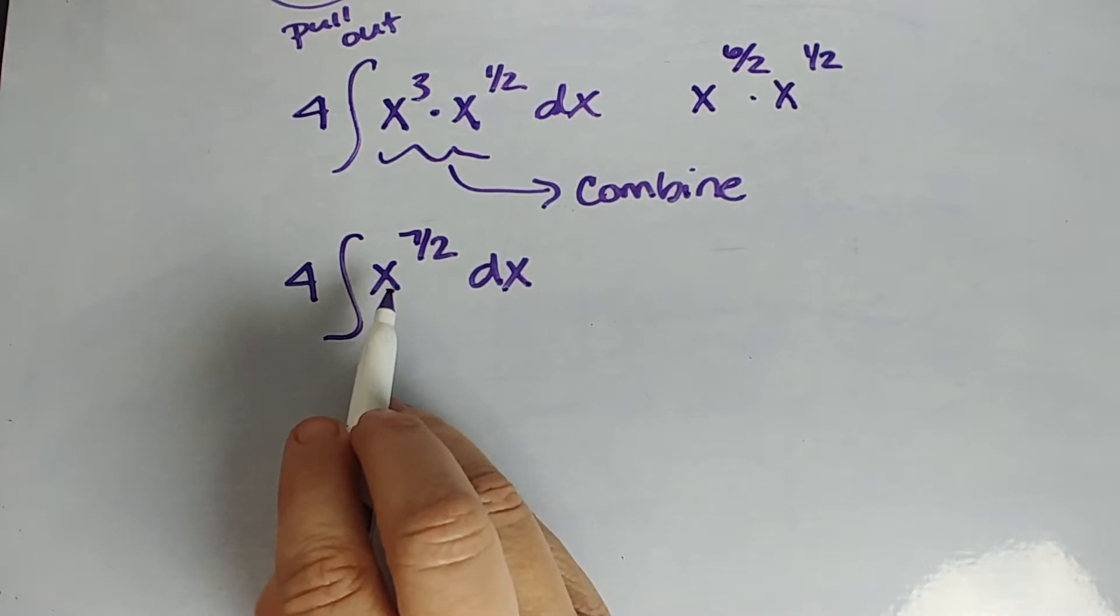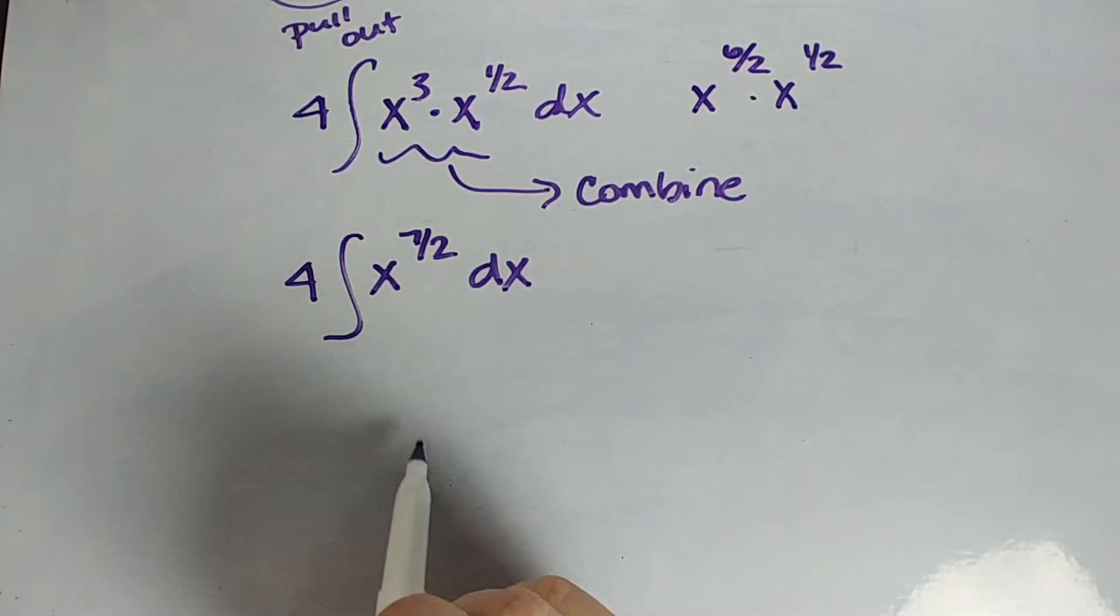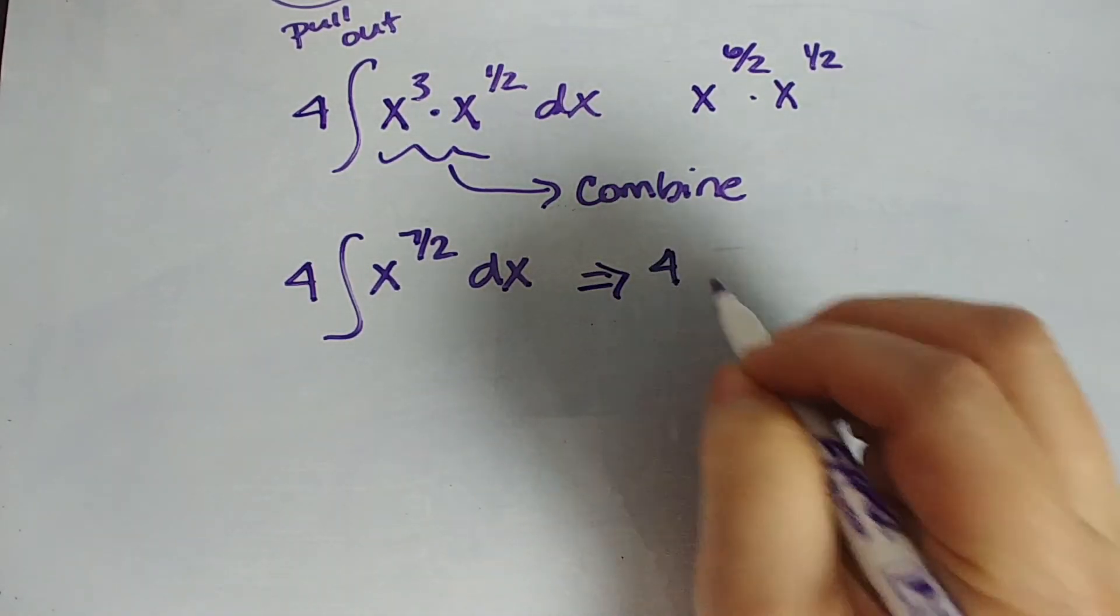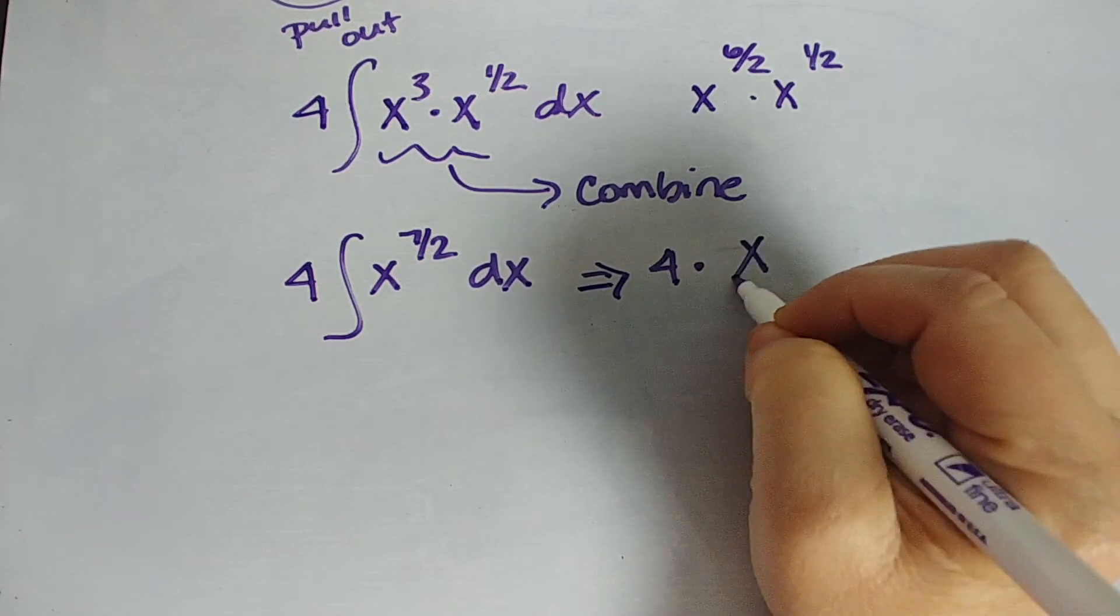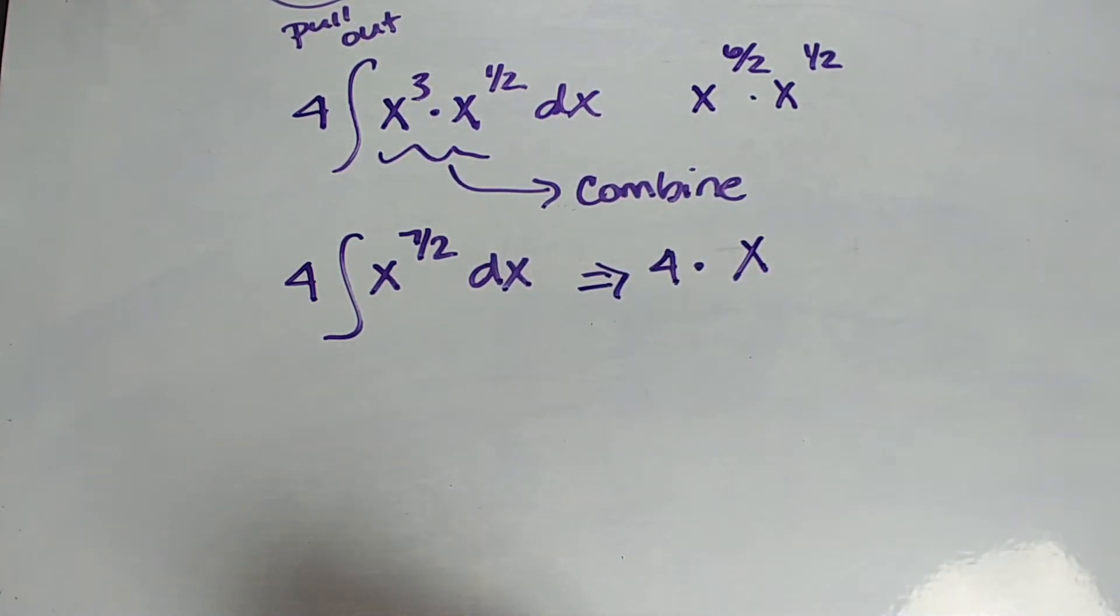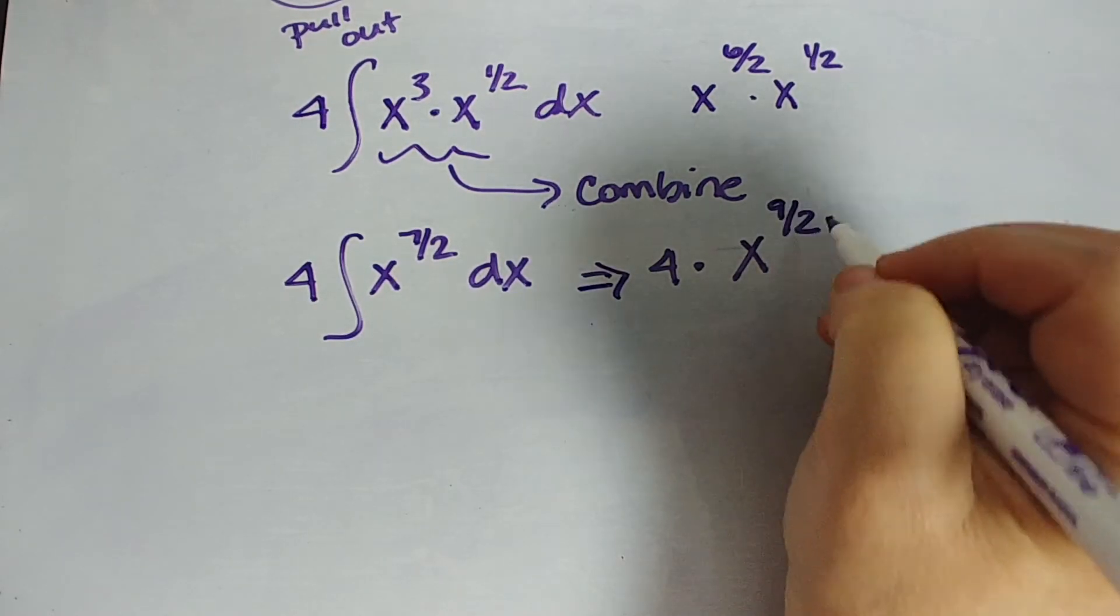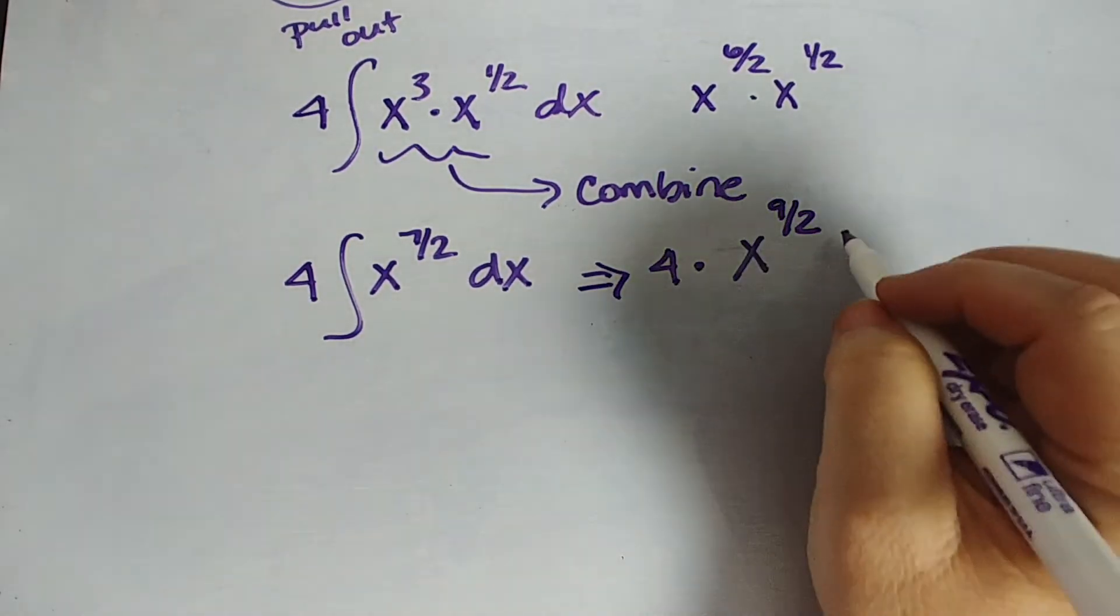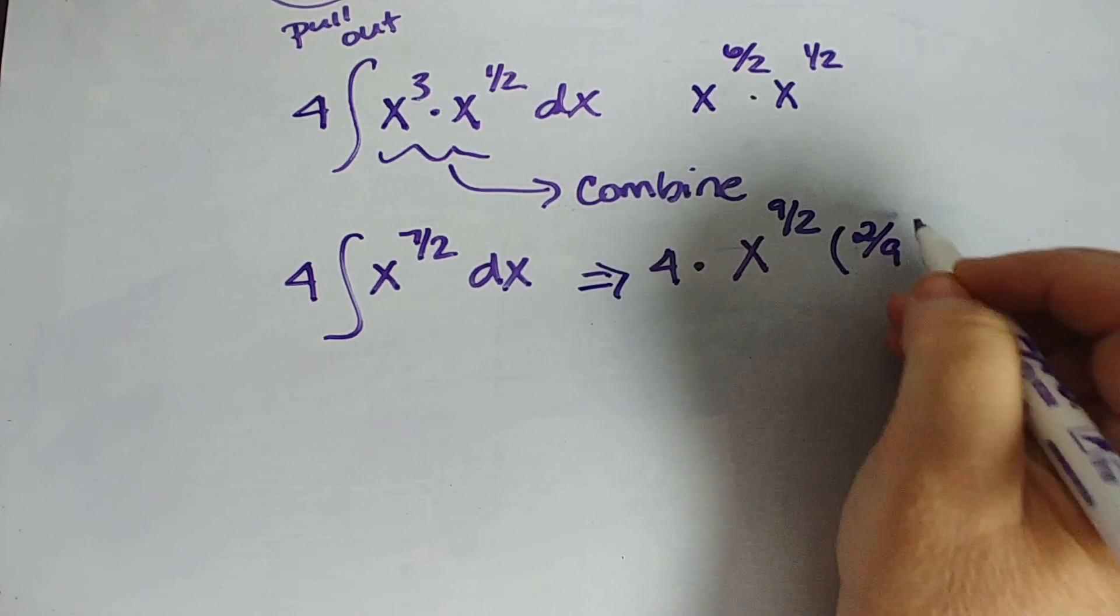So the basic property or the basic rule for integration is that you are trying, remember, we're going the opposite way of a derivative. So we're going to add one to the exponent and we're going to divide by that new exponent. That's going to get a little messy here because our exponent's a fraction, but we can handle it. So this will become four times x to the, instead of seven halves, we're going to add two halves. So we're going to have nine halves. And we are going to divide by that new exponent, a new exponent of nine halves. But instead of doing that, let's multiply by two ninths.